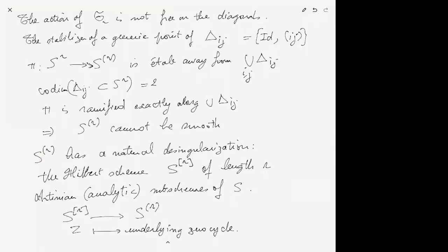The Hilbert scheme is a little complicated in general, but it has a nice description in codimension one over the symmetric power — or codimension one on the Hilbert scheme itself. Let me give a geometric description.